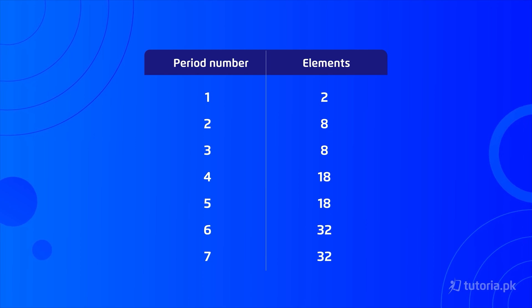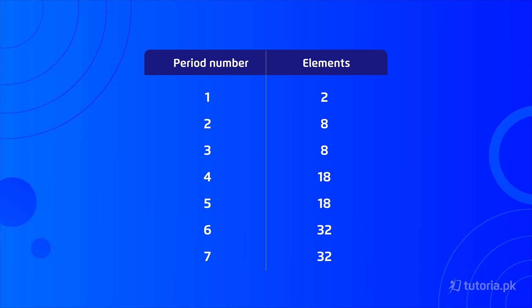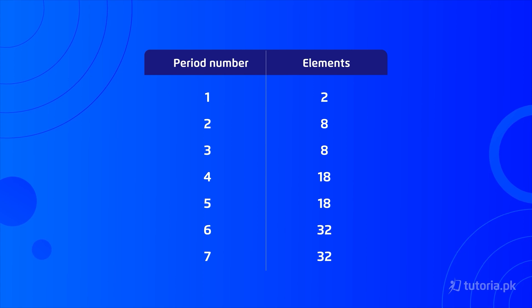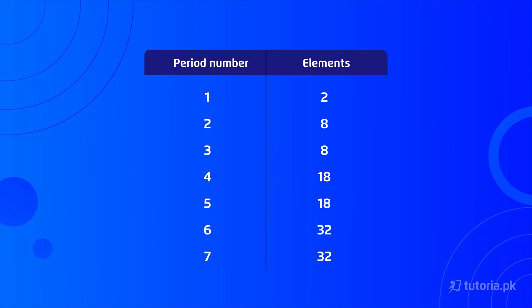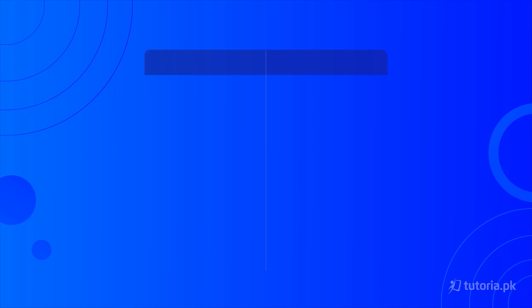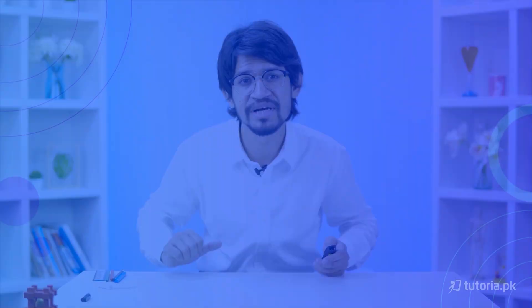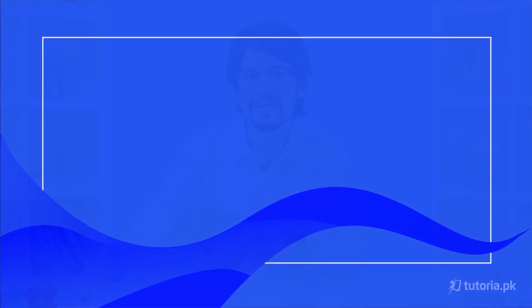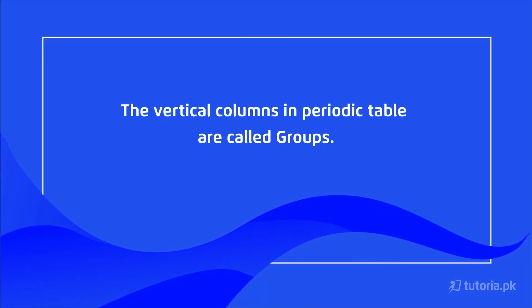Periods 2 and 3 have 8 and 8 elements respectively. Periods 4 and 5 have 18 and 18 elements. Periods 6 and 7 have 32 and 32 elements. Now talking about groups in the periodic table, vertical columns are called groups.